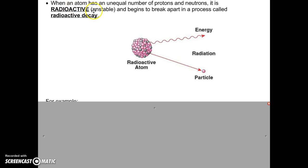Now the thing is, when atoms have an equal number of protons and neutrons, it's stable. But when the number of protons and neutrons are not equal, the atom is radioactive or unstable. And if an atom is radioactive, it begins to break apart in a process called radioactive decay.